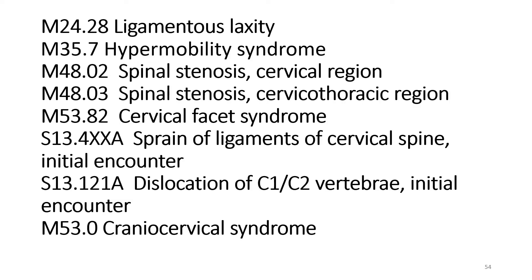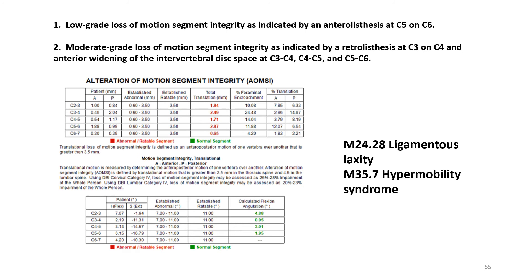For Case 1, this is the list of diagnosis codes generated by reading the DMX study. Ligamentous laxity will apply to all the findings. The first two impressions refer to abnormal translations or angular motion in the subaxial spine — the CRMA data is invaluable in establishing the findings intersegmentally. Note that the established abnormal range for vertebral translation is 0.60 to 3.5 millimeters, and all of the total translations highlighted in red fall into that range. None of them exceed 3.5 millimeters, and none of the percentage of translation values exceed 20%, so none of these findings are rateable — but they are still abnormal.